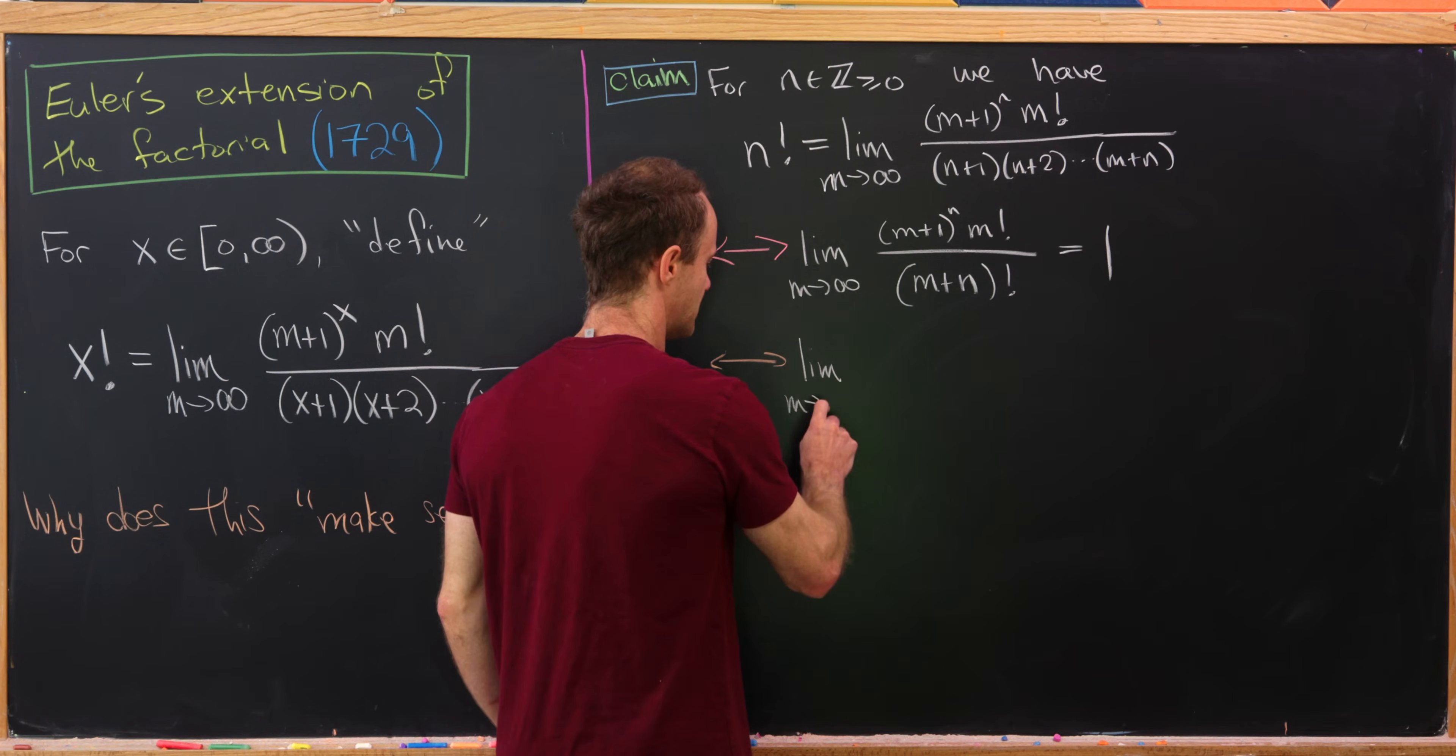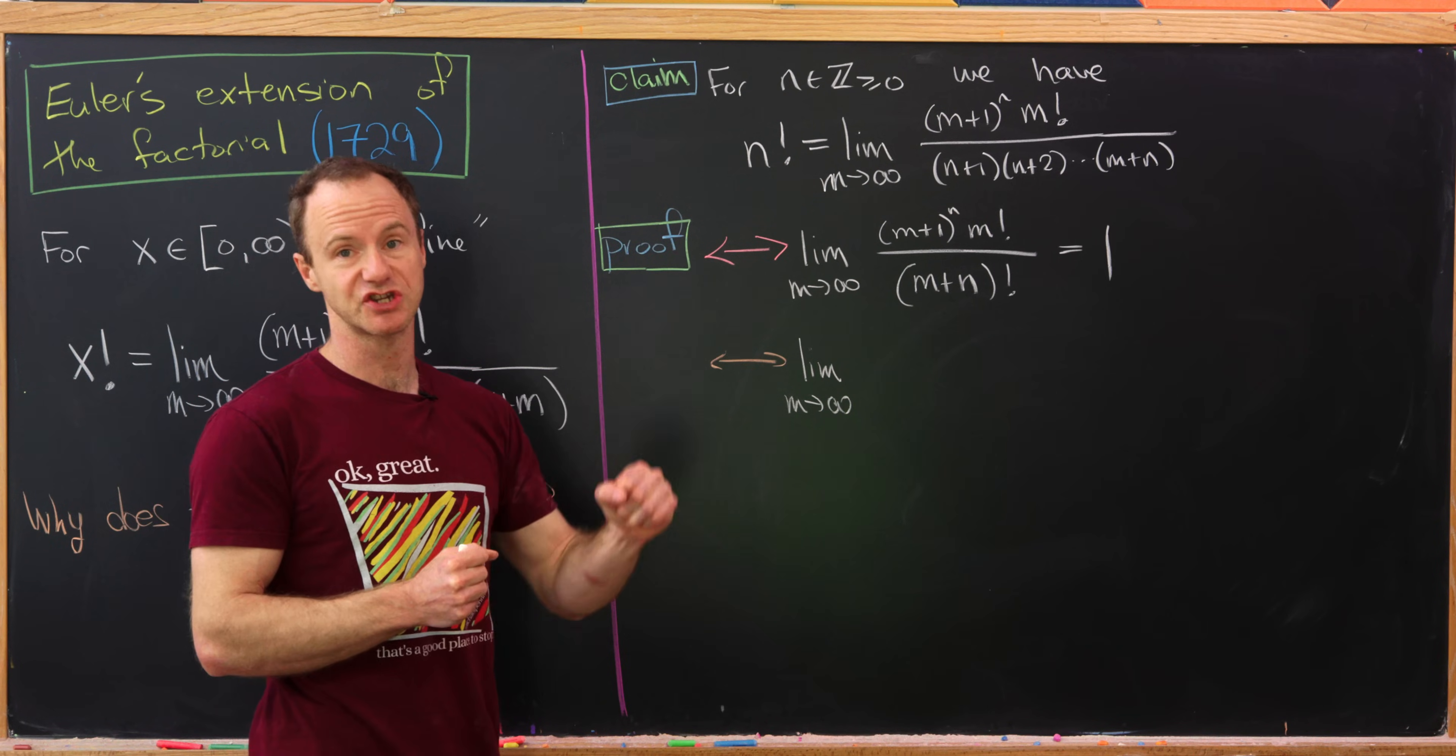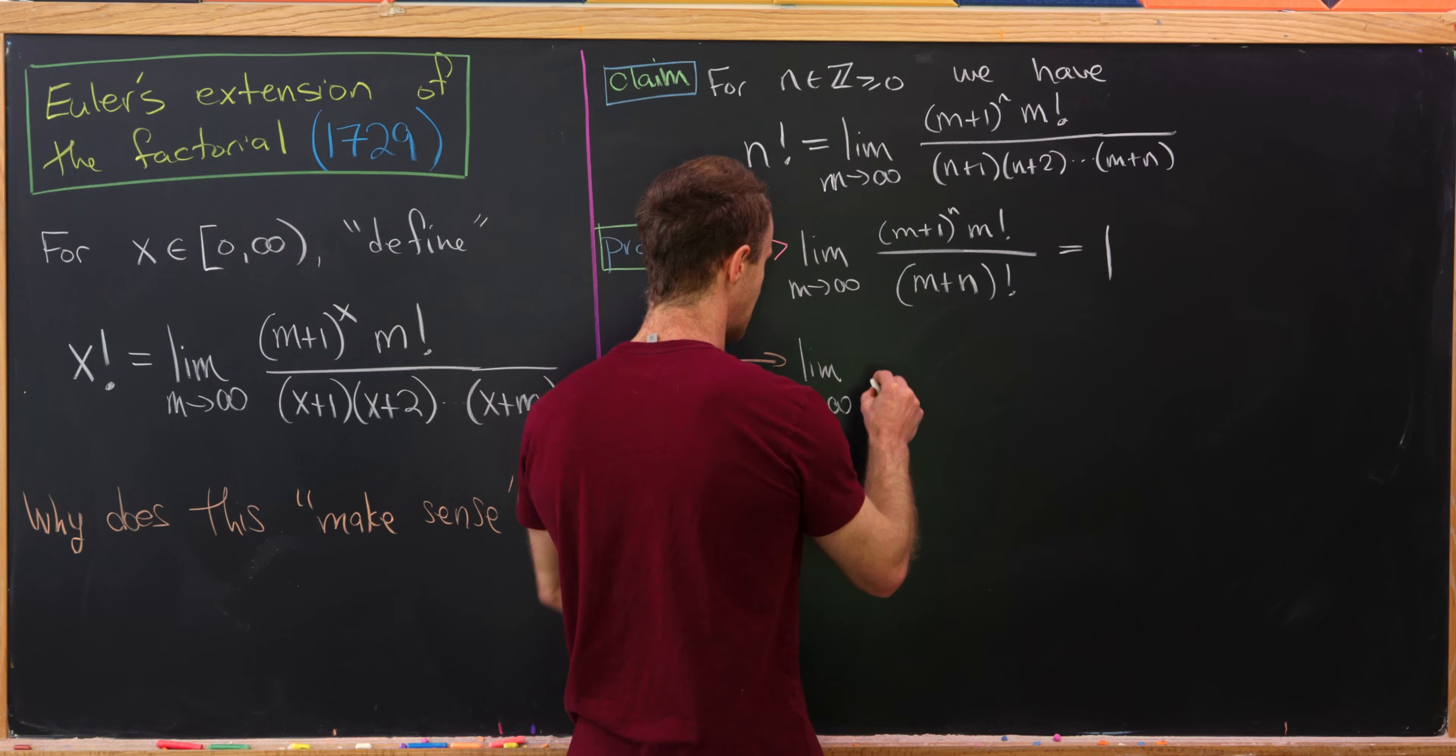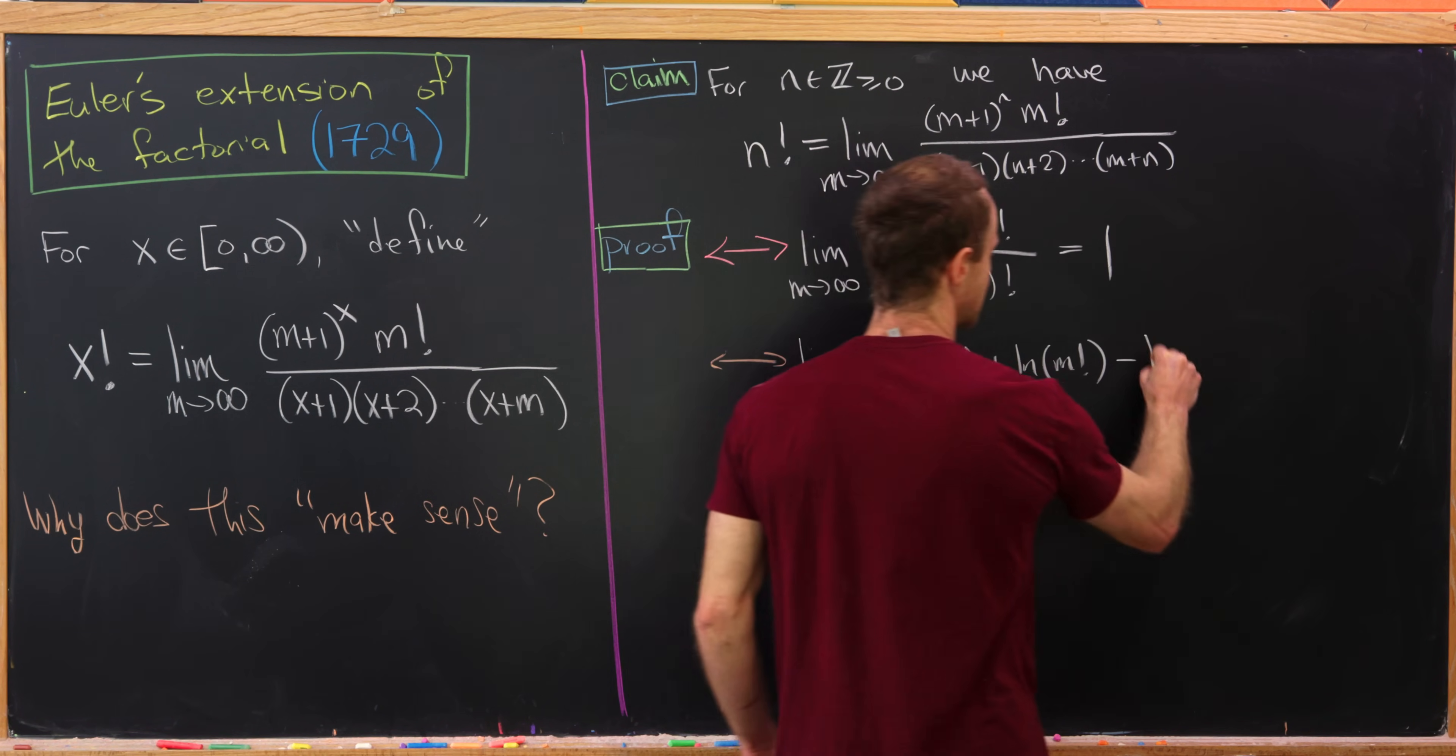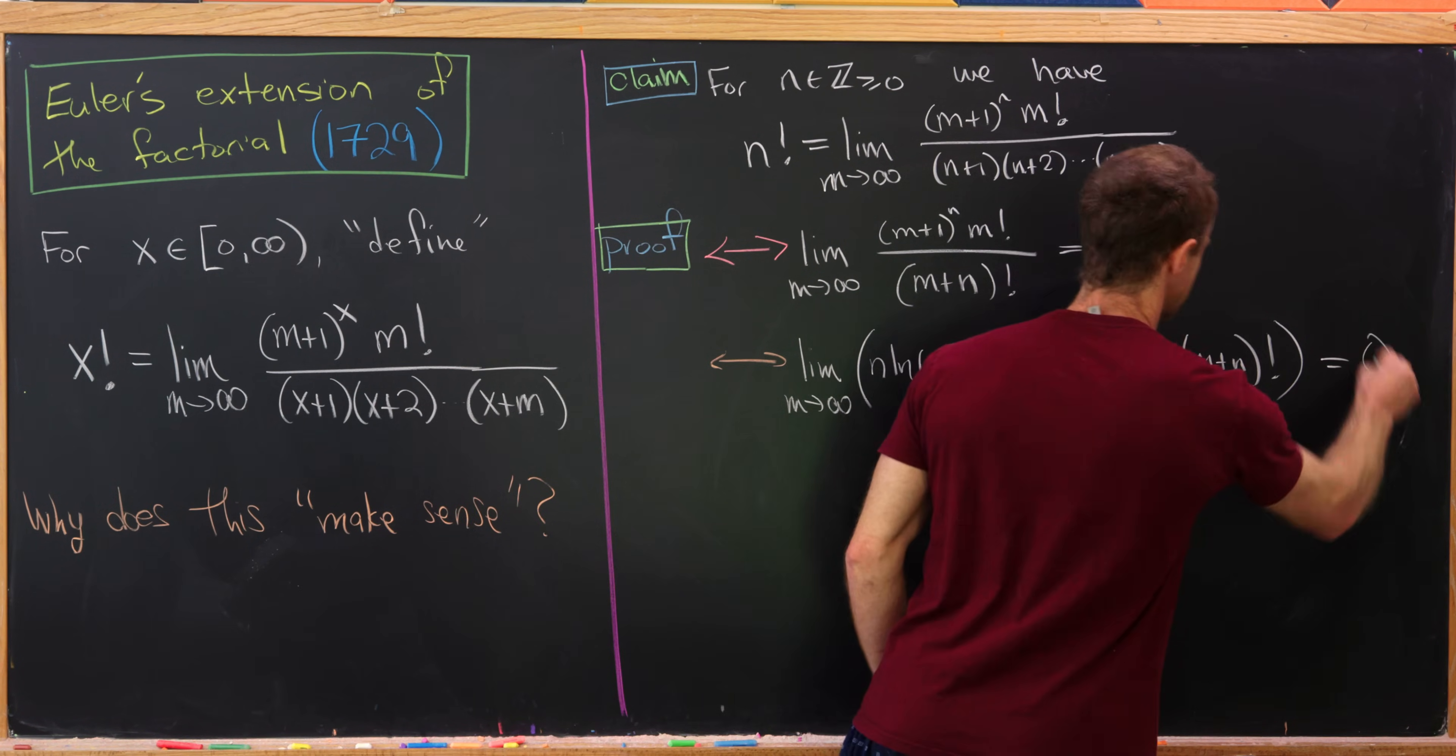We have the limit as m goes to infinity of the logarithm of the argument of this limit, but we can apply logarithm rules here that will change exponentiation to multiplication, multiplication to addition, and division to subtraction. So in the end we will have n times ln(m+1) plus ln(m!) minus ln((m+n)!), and then that needs to be equal to ln(1), but ln(1) is zero.